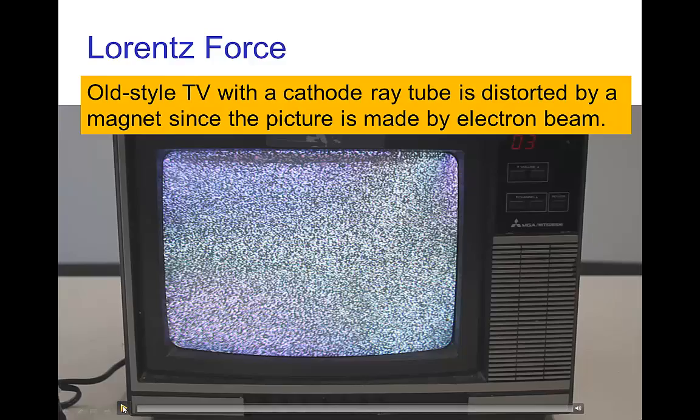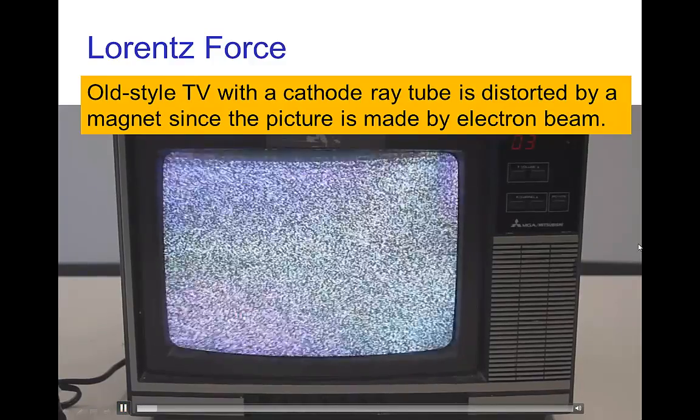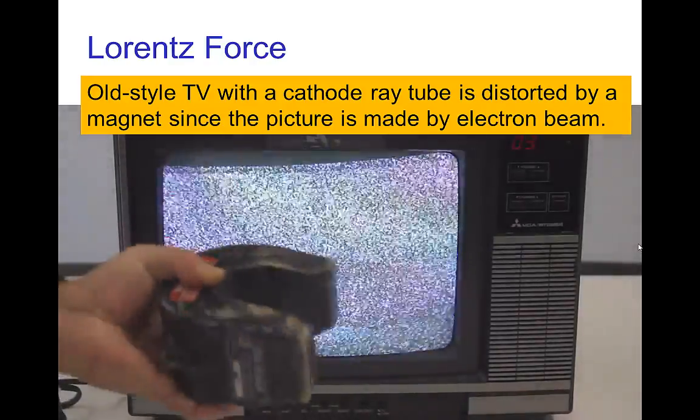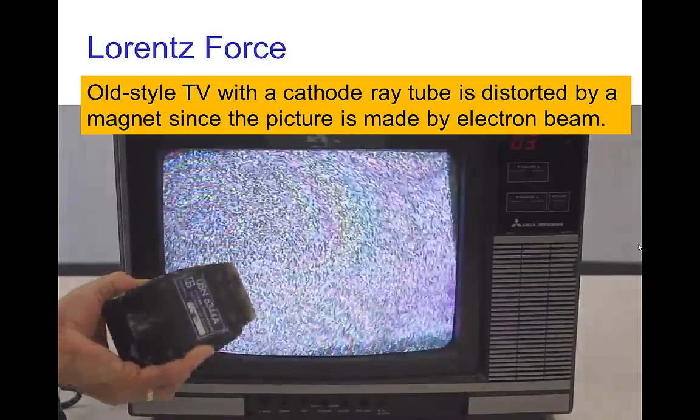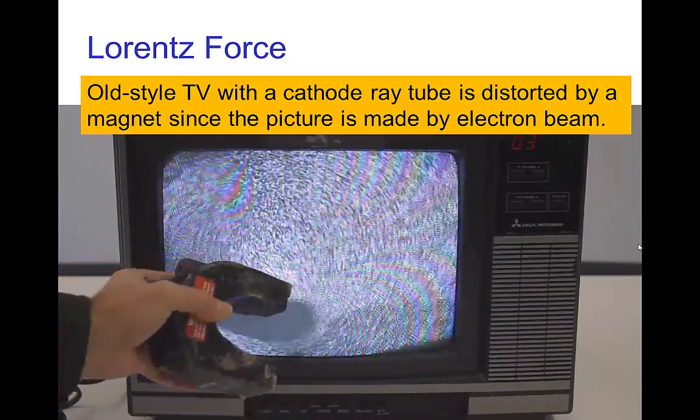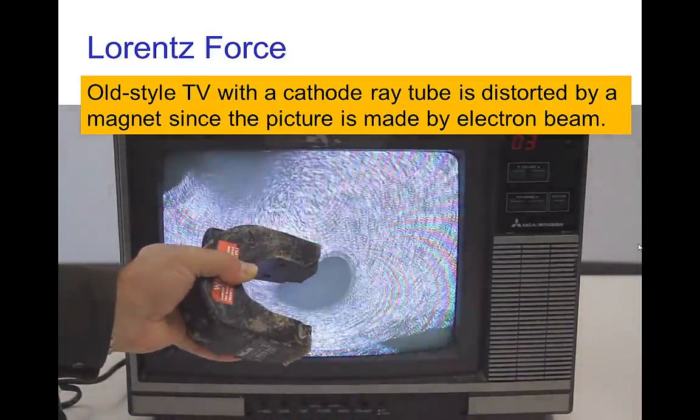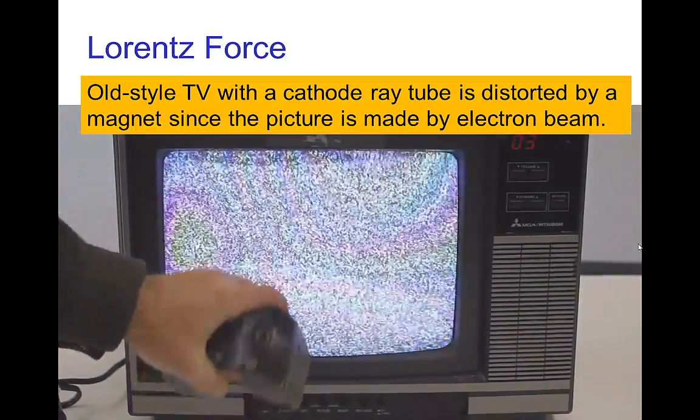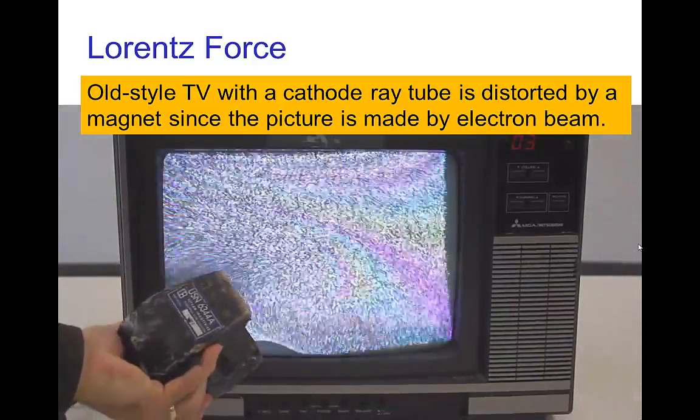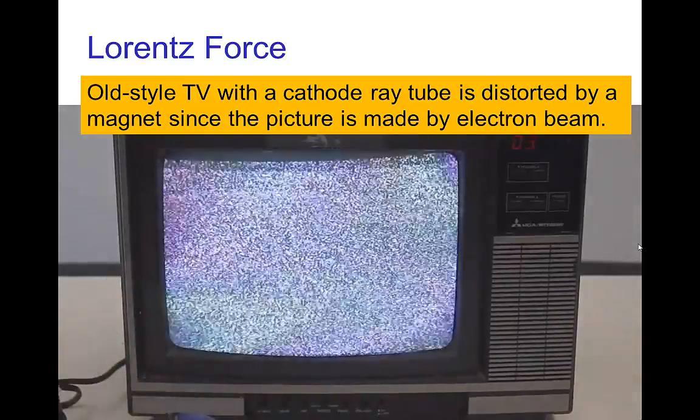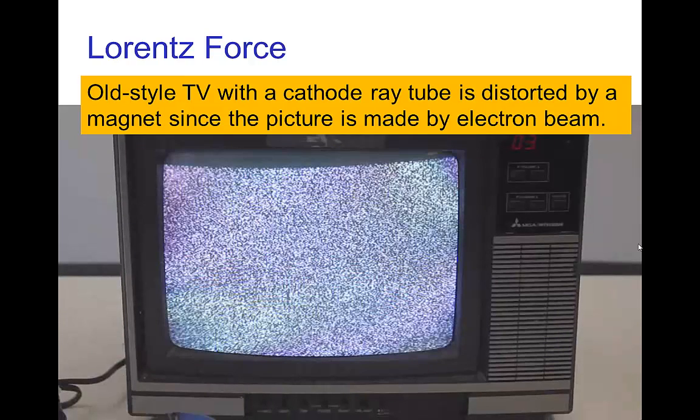There's a similar effect you can do if you have an old TV. These old TVs use electron beams to light up the screen. And if you bring a big magnet near the screen, now this can damage the picture of the screen permanently, so don't do this if you are still using that television set. But we see how distorted and warped the image becomes, and this is because the electron beams in the cathode ray tube are being bent and deflected by the magnet.